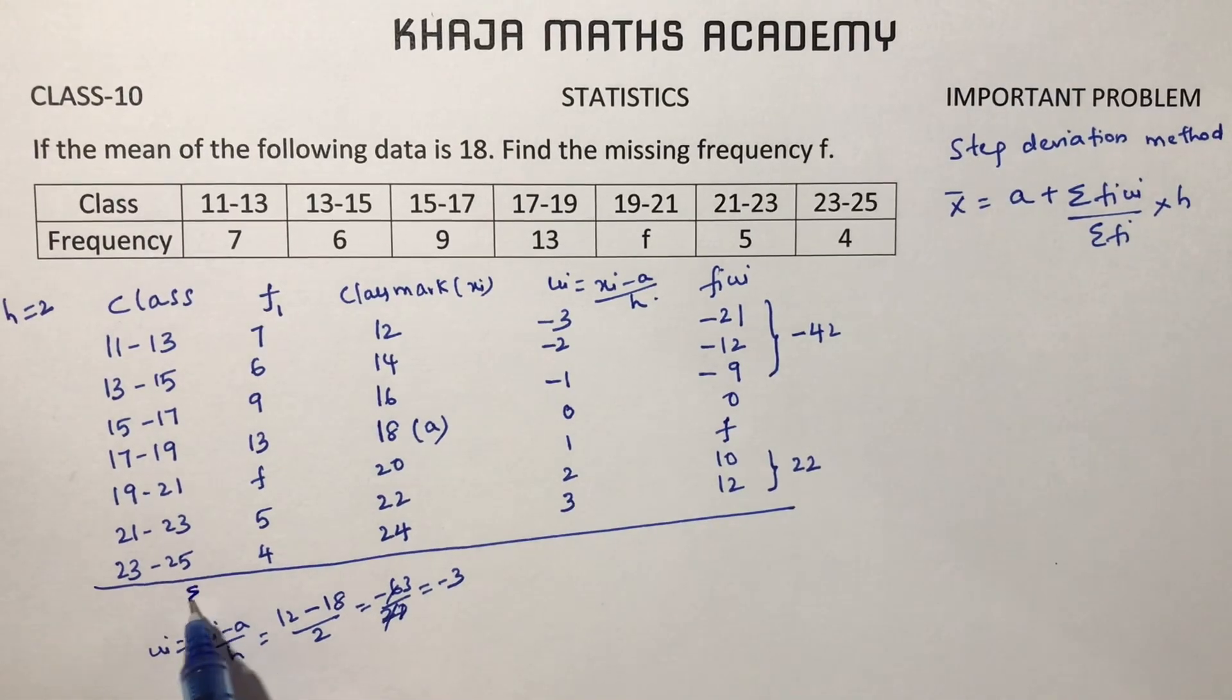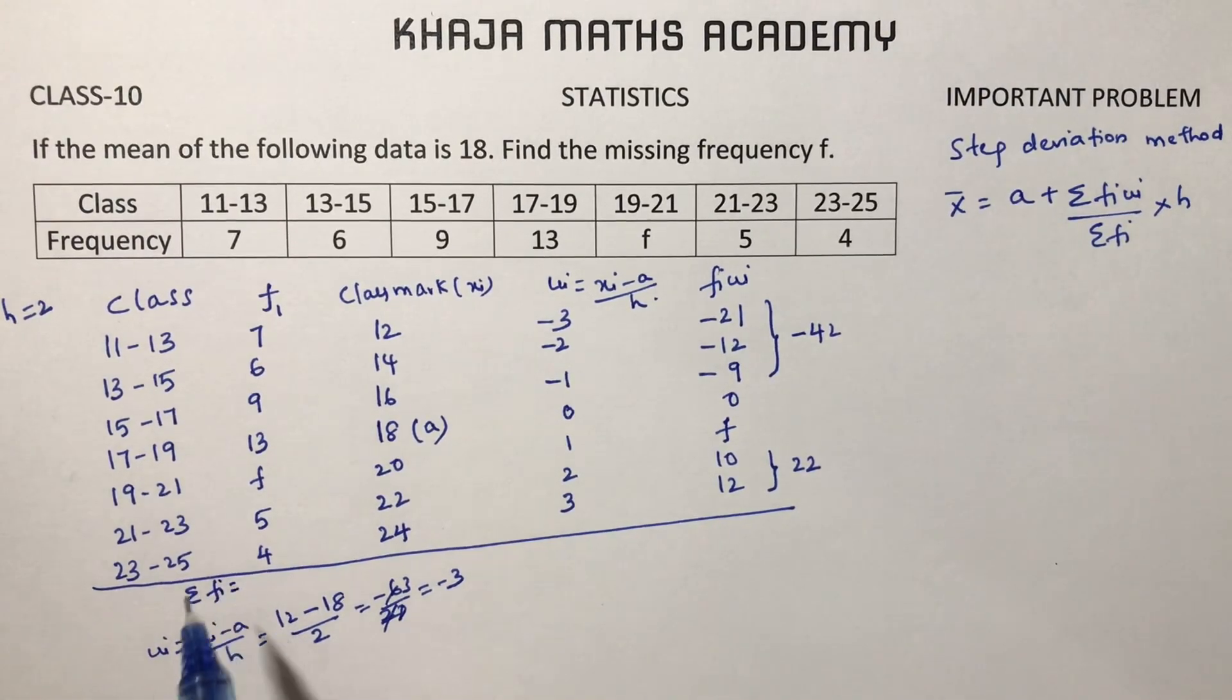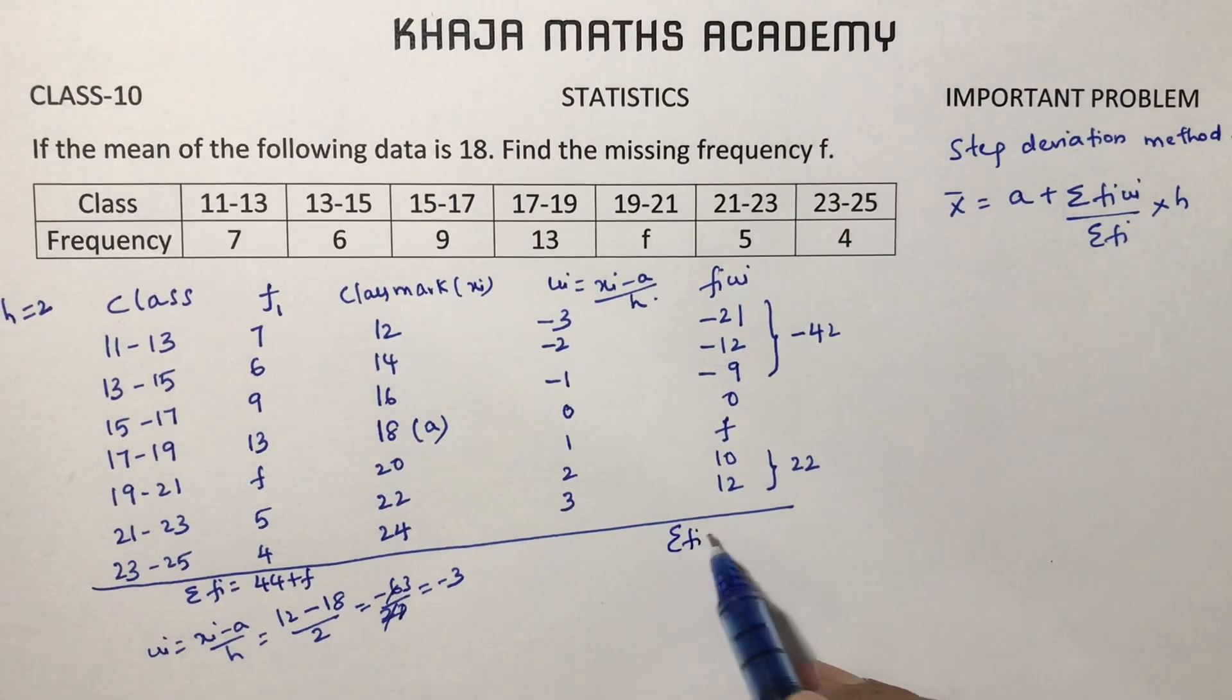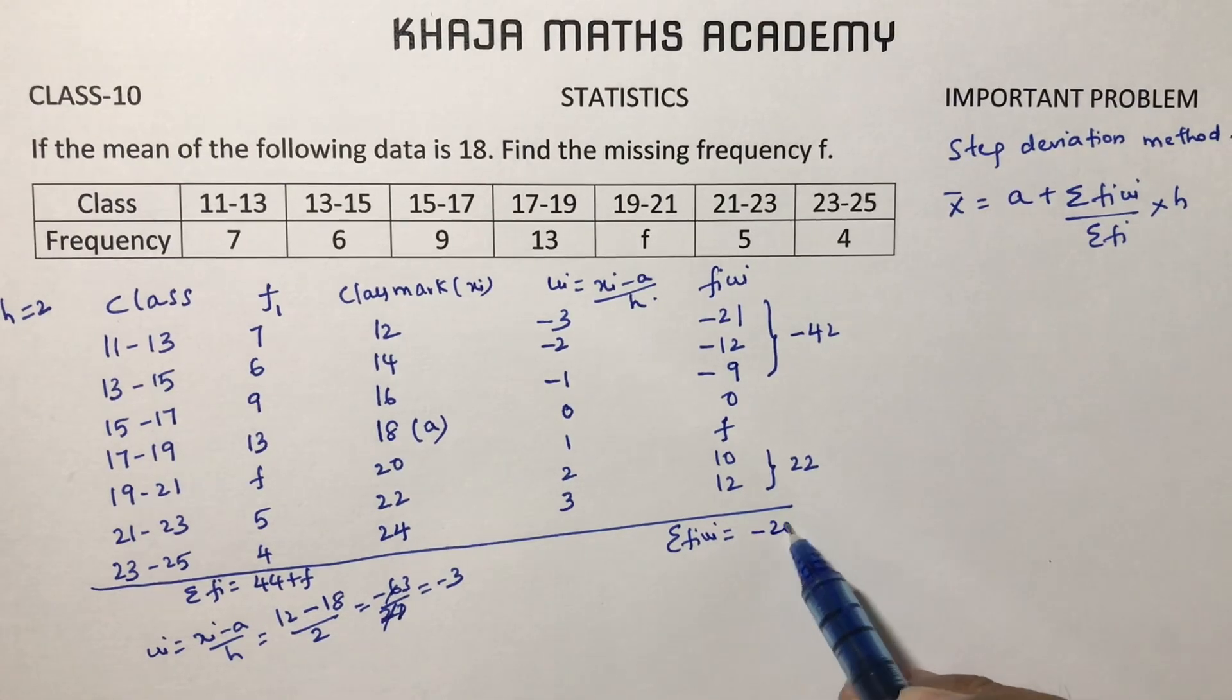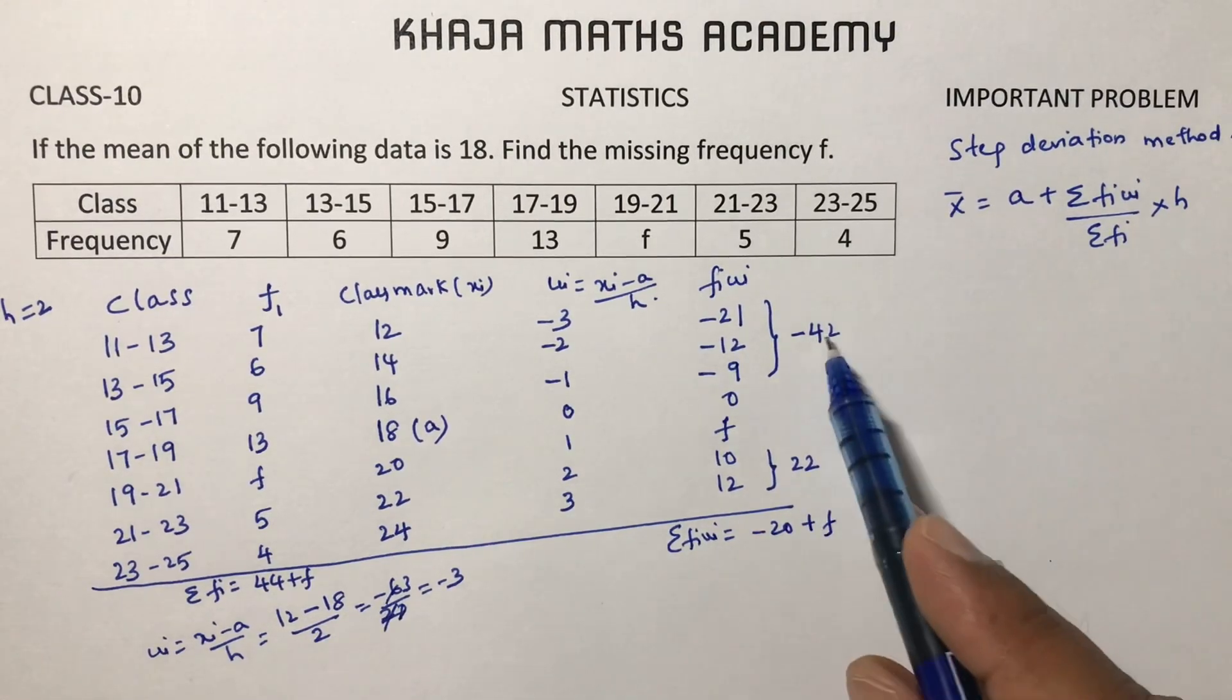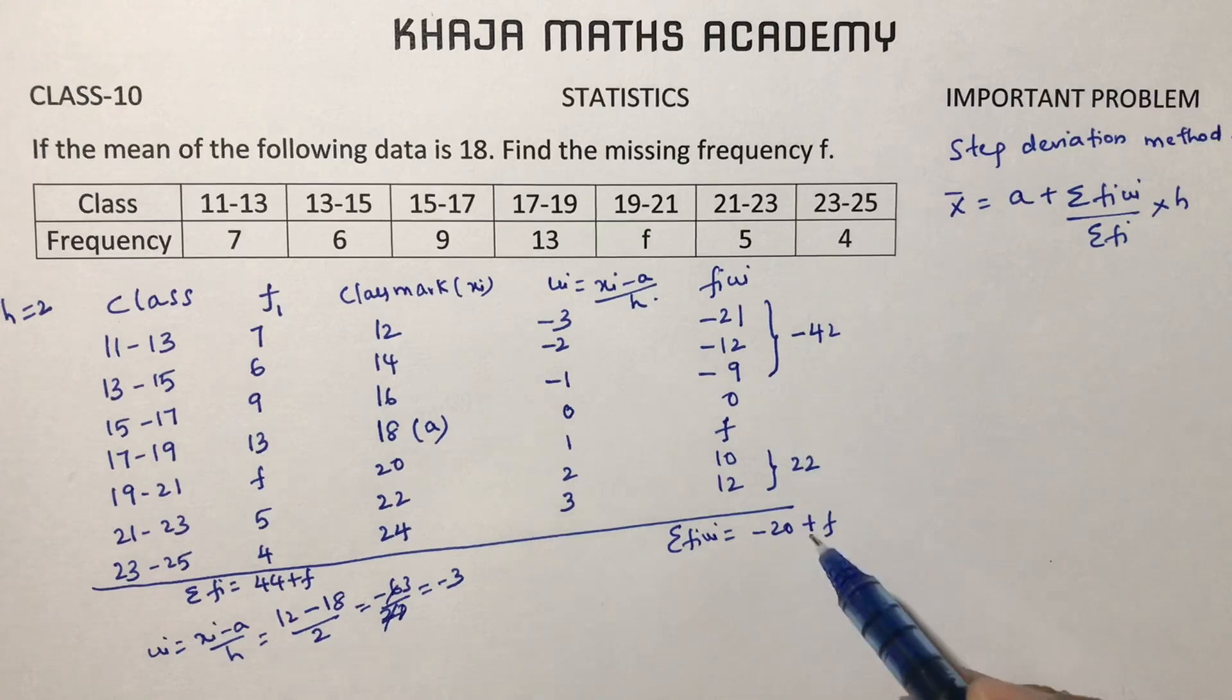Sigma Fi is 44 plus F, and sigma Fi ui is minus 20 plus F, because minus 42 plus 22 is minus 20 plus F.